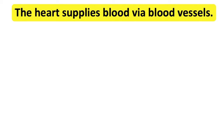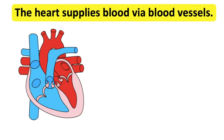The heart supplies blood to the body. Blood carries important materials which are required for the body to function and to keep healthy. These include nutrients and oxygen. Blood also helps to get rid of waste material and carbon dioxide from the body, as well as fighting infections.